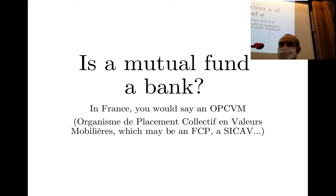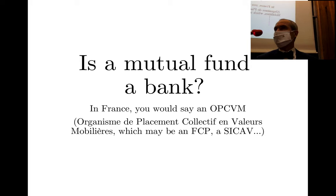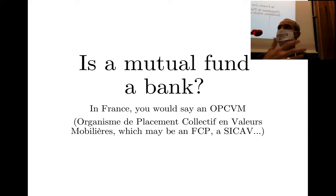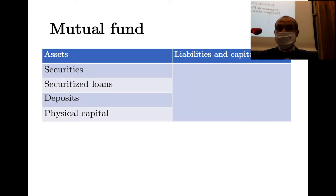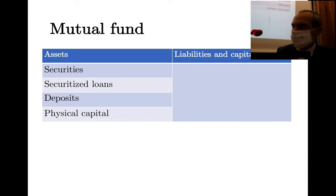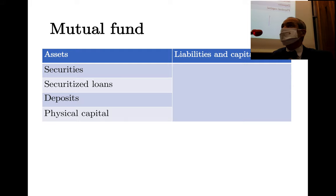You decide to invest in a fund based on strategy — passive funds, trackers, or active management by sector. You own only a part of a larger fund managed either passively, reproducing a stock market index, or through active management. A mutual fund has assets composed of financial securities or securitized loans.